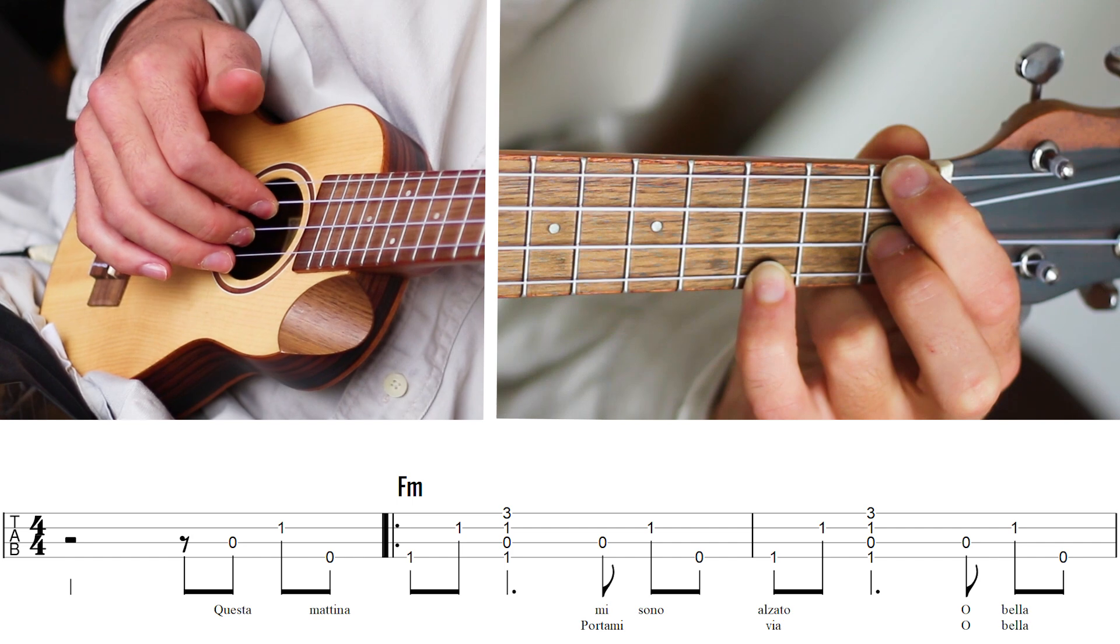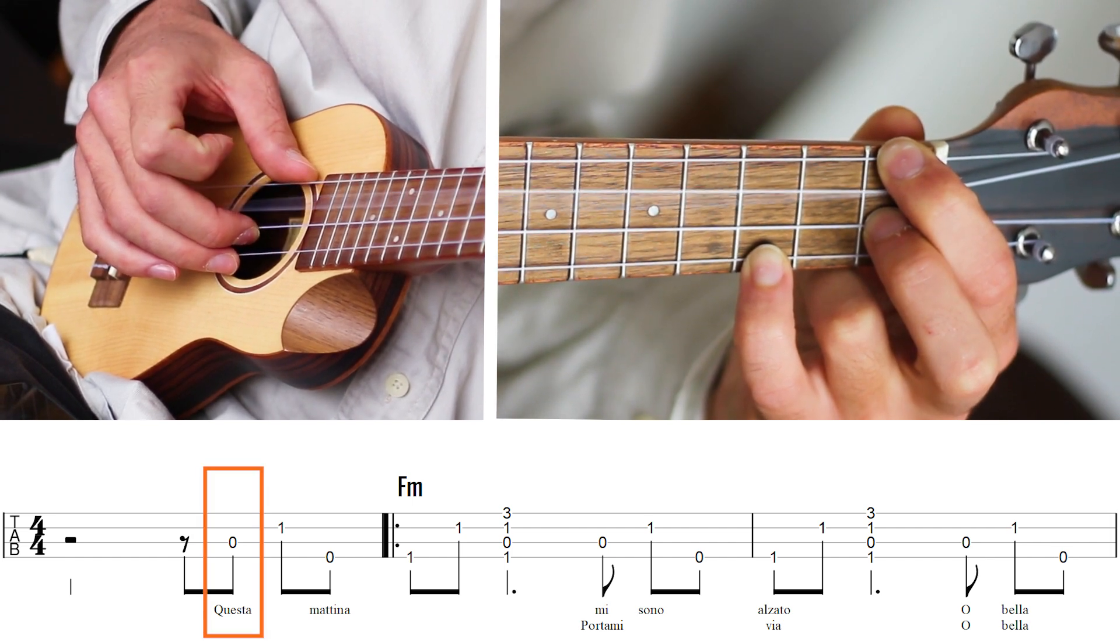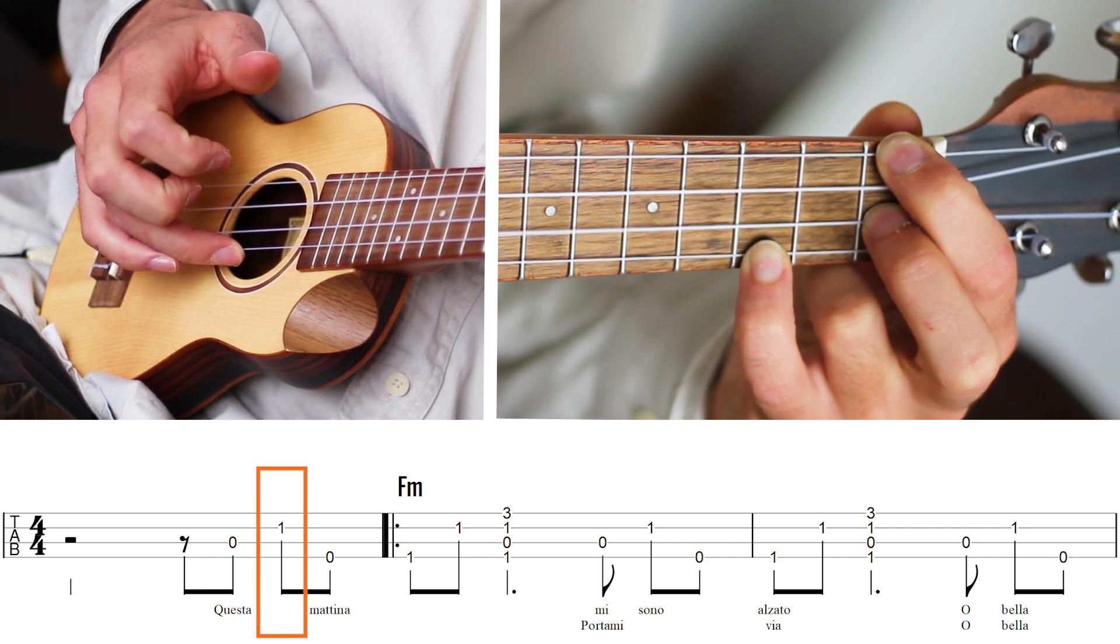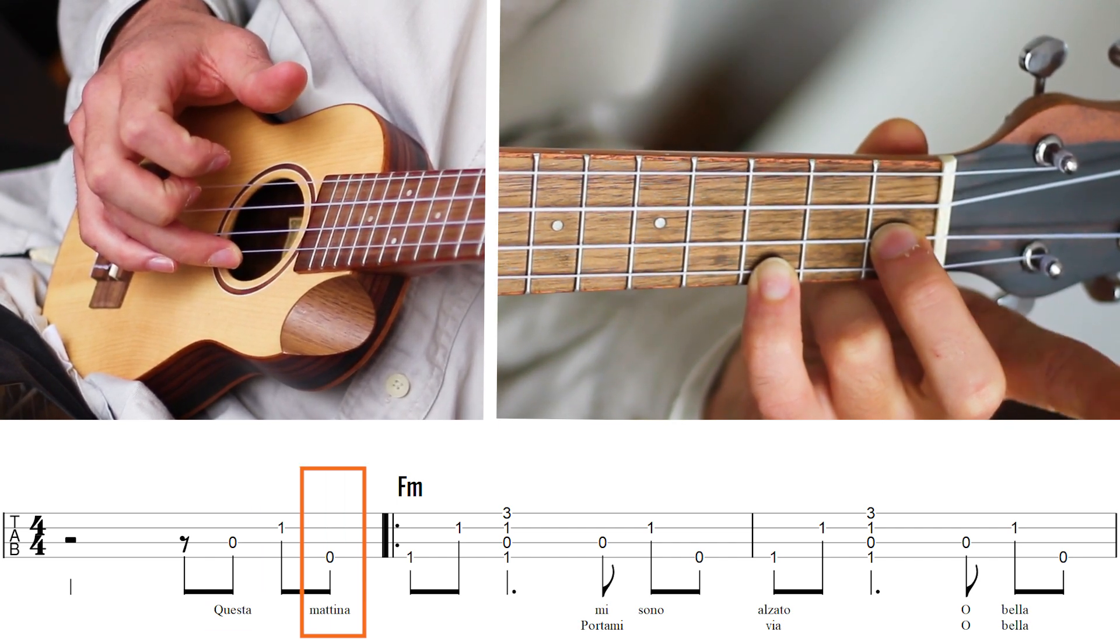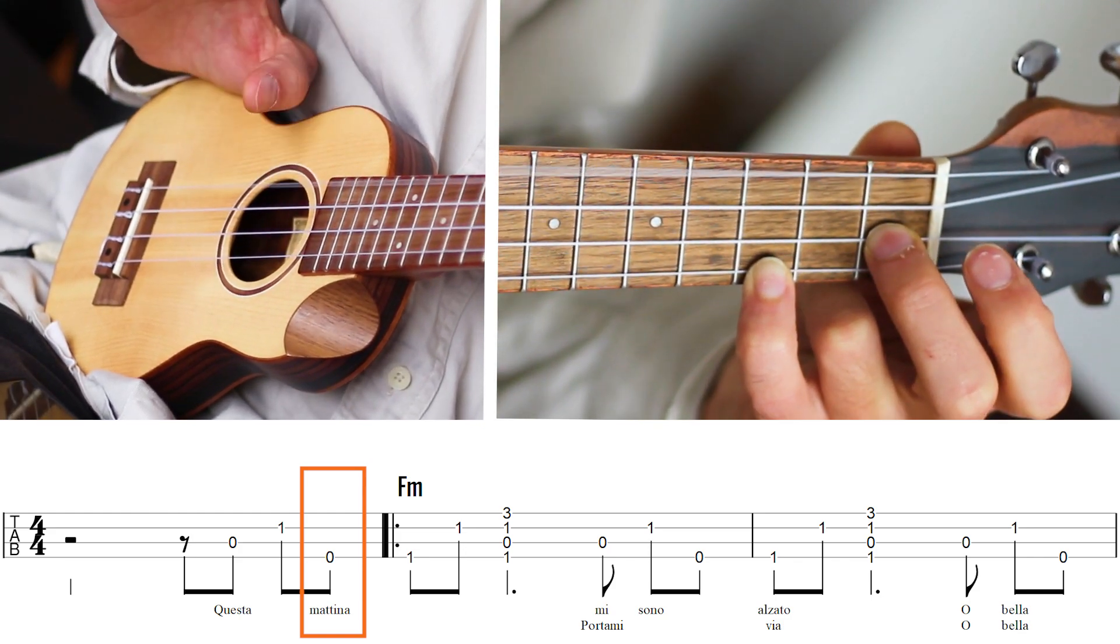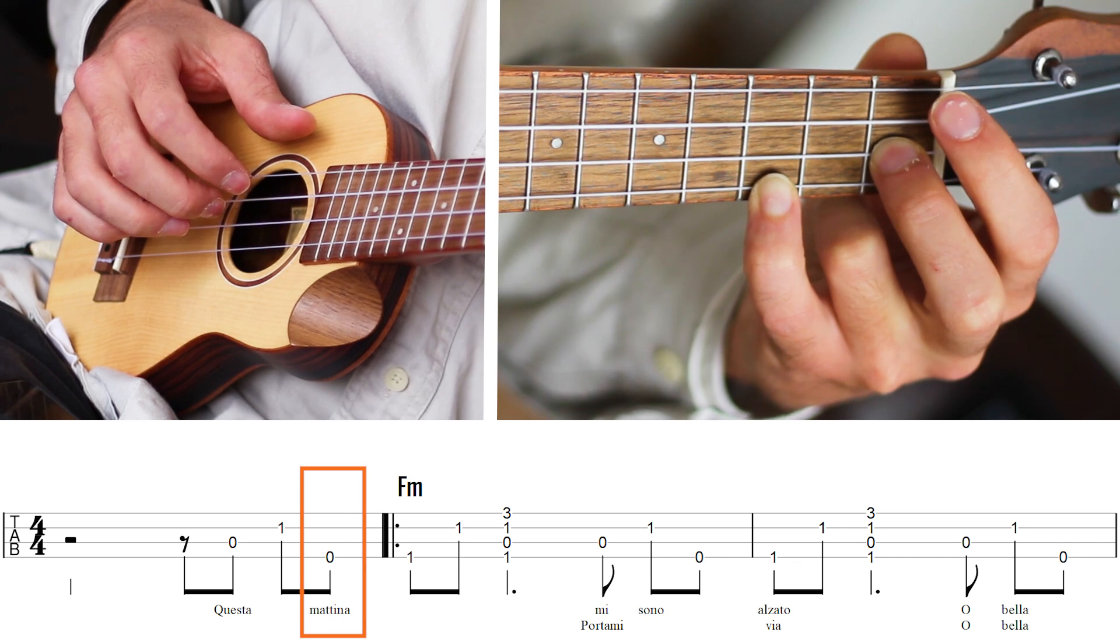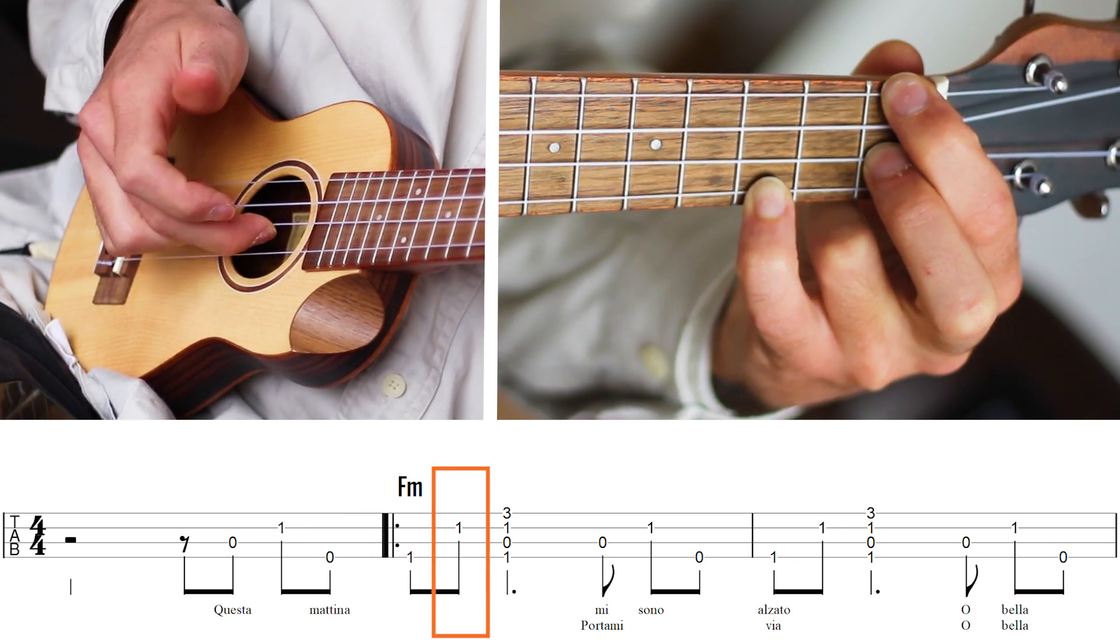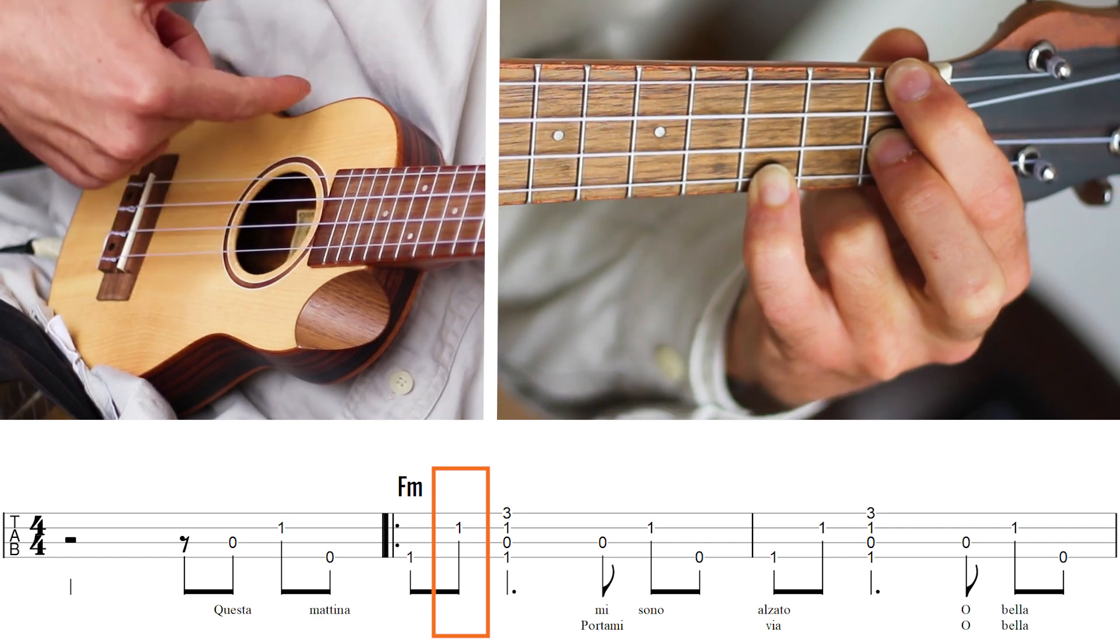So we start like this, playing the C string, and after that the E string, and then I remove the pointing finger of my left hand to play open G string with the thumb, and then I get it back, and then middle finger, and then I strum.